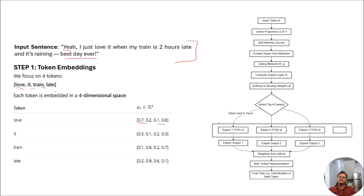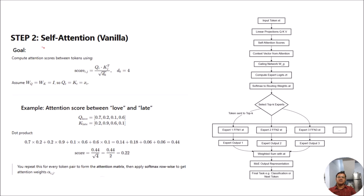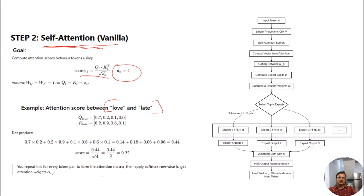I have prepared this diagram to explain the concept. Our input sentence is: 'Yeah I just love it when my train is two hours late and it's raining, best day ever' — a sarcastic sentence. Instead of taking all tokens, I just took four tokens: love, eat, train, late, with four-dimensional embeddings. The first part is to calculate the vanilla self-attention using query, key, and value: Q into K-transpose divided by the square root of dimension t.